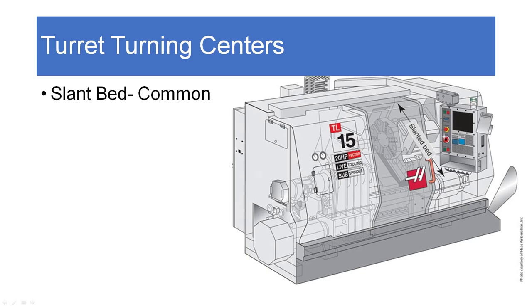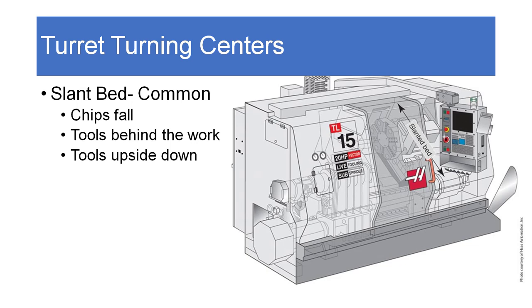Almost all modern CNC turning centers are slant bed. Instead of the X-axis being flat like on a manual lathe, the bed is tilted up at around a 45-degree angle. The reason is that chips fall down by gravity and flow away, so you don't have to spend much time clearing them — you can put a chip conveyor on the machine. The tools are typically behind the work and upside down because of this orientation.